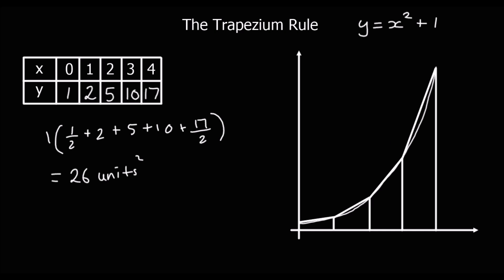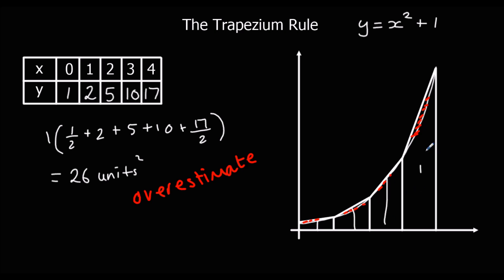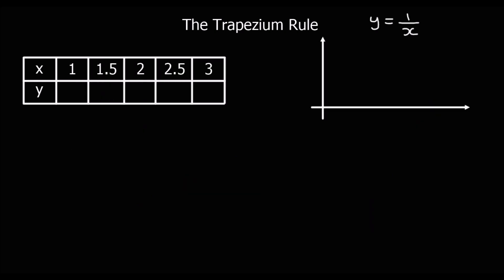It's actually going to be an overestimate because the trapeziums create little extra spaces between themselves and the actual curve — the curve goes underneath the trapeziums. If we made the trapeziums smaller, say every 0.5, and used more trapeziums, we'd get a more accurate answer. The smaller you make them, the more accurate it becomes.